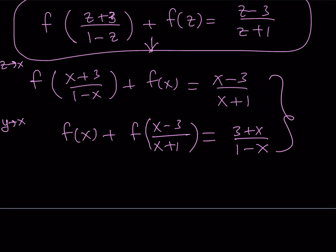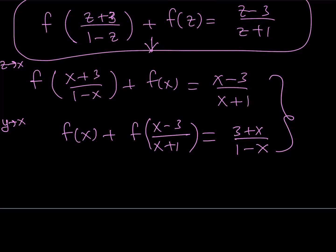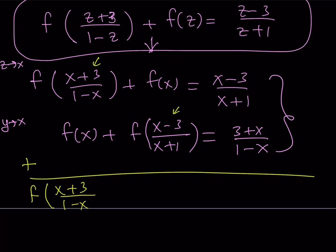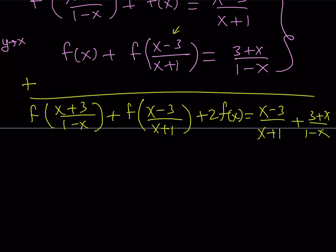If you just add these two equations, something interesting happens. Notice that I have f of (x plus 3) over (1 minus x) plus f of (x minus 3) over (x plus 1) appearing — that's exactly the original problem's left-hand side. So adding the two equations gives: f of (x plus 3) over (1 minus x) plus f of (x minus 3) over (x plus 1) plus 2f of x, equals the sum of the two right-hand sides. And this sum on the left equals x, from the original equation.